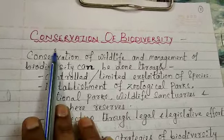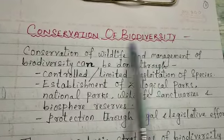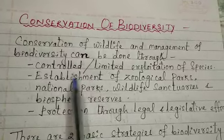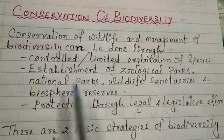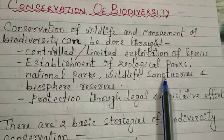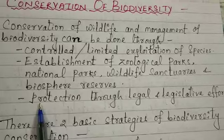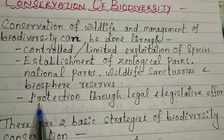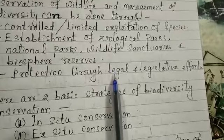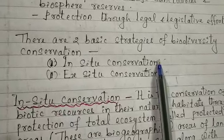Today we are going to discuss the conservation of biodiversity. To conserve wildlife and manage biodiversity, we need to follow three steps: controlled or limited exploitation of species, establishment of protected areas such as national parks, wildlife sanctuaries, and biosphere reserves, and protection of wildlife through legal and legislative efforts — laws, rules, or orders. There are two basic strategies of biodiversity conservation.